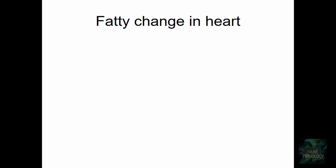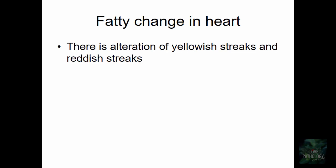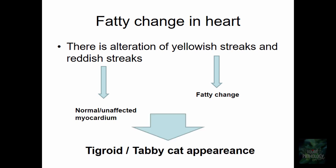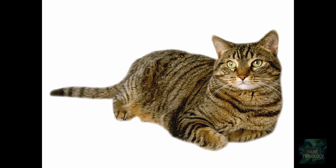Fatty change can also occur in other organs, particularly the heart. There is an alternation of yellowish streaks and reddish streaks in the heart. The yellowish streaks show characteristic fatty change, while the reddish streaks are normal or unaffected myocardium. This combination results in something called the Tigroid or tabby cat appearance — named after the tabby cat with its alternate dark and light bands.